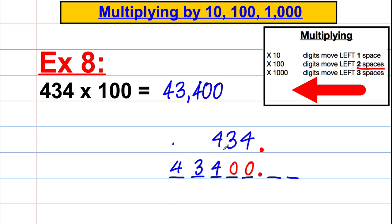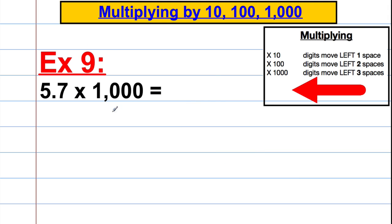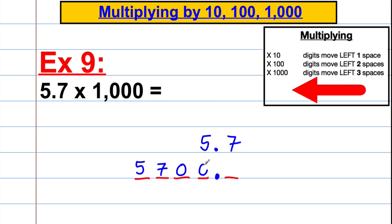5.7 multiplied by 1,000. Write down 5.7 first with your decimal point and some place value holders as working. Multiplying by 1,000 moves the digits three spaces to the left. The 5 moves one space, two space, three space — the 5 goes there. The 7 goes there, and you put zeros in. The answer is 5,700.